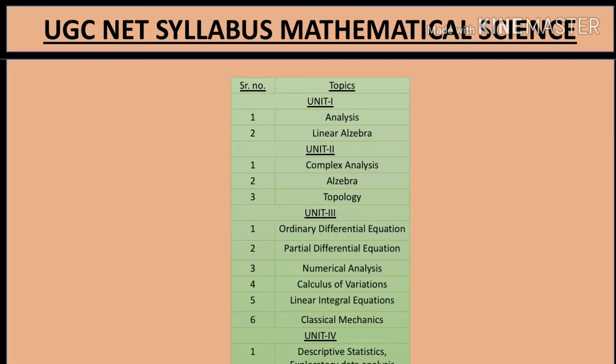For Mathematical Sciences, the syllabus is organized into units. Unit 1 covers analysis and linear algebra. Unit 2 covers complex analysis, algebra, and topology. Unit 3 covers ordinary differential equations, partial differential equations, numerical analysis, calculus of variations, linear integral equations, and classical mechanics. Unit 4 covers descriptive statistics and exploratory data analysis.